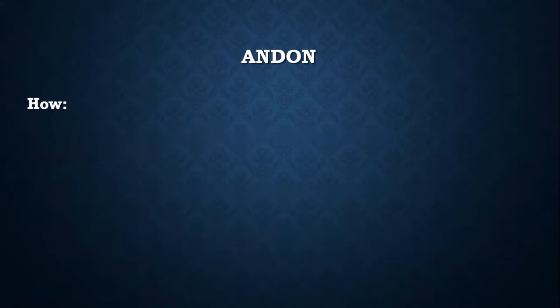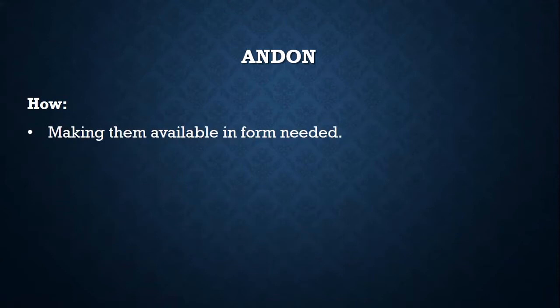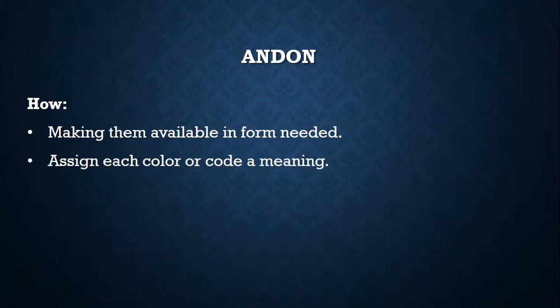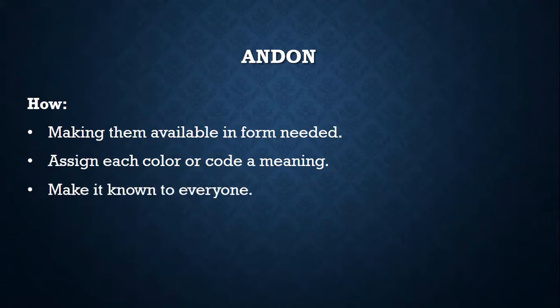The next question is: how does it work? Organizations generally make Andon available at required sites of abnormality generation in the desired form, as per environment, to achieve transparent communication flow to stakeholders. They are generally given different colors, each having a unique meaning, so that communication goes to relevant stakeholders. Where color can't suffice the purpose, organizations also use special symbols or a number system as well.